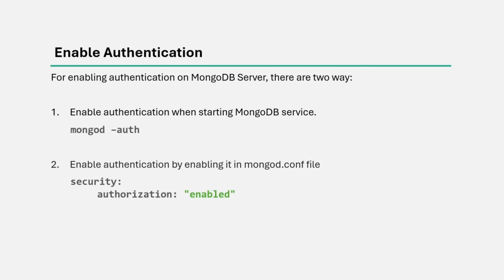One way is we can stop the MongoDB service running in the background and then start the MongoDB service in the foreground using the mongod command. When we execute this mongod command, we can also specify the flag --auth, which will start MongoDB with authentication enabled. Or we can modify the mongod configuration file and add the authorization setting there, setting authorization to enabled.